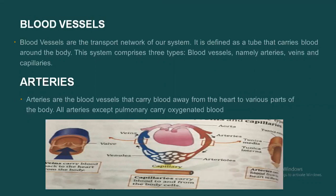Arteries have a narrow lumen. The major arteries diverge into minor arteries and then into smaller vessels called arterioles. Arteries are deeply situated in the body, and the blood flows in them in spurts.